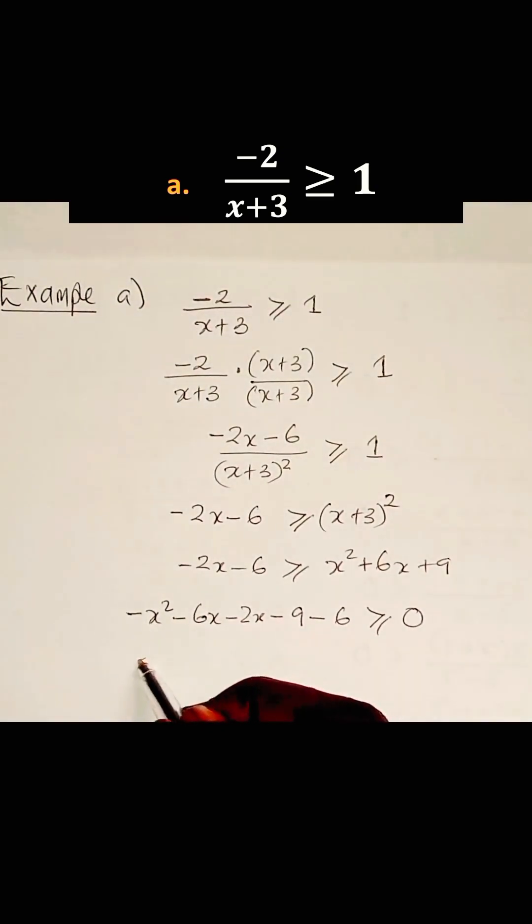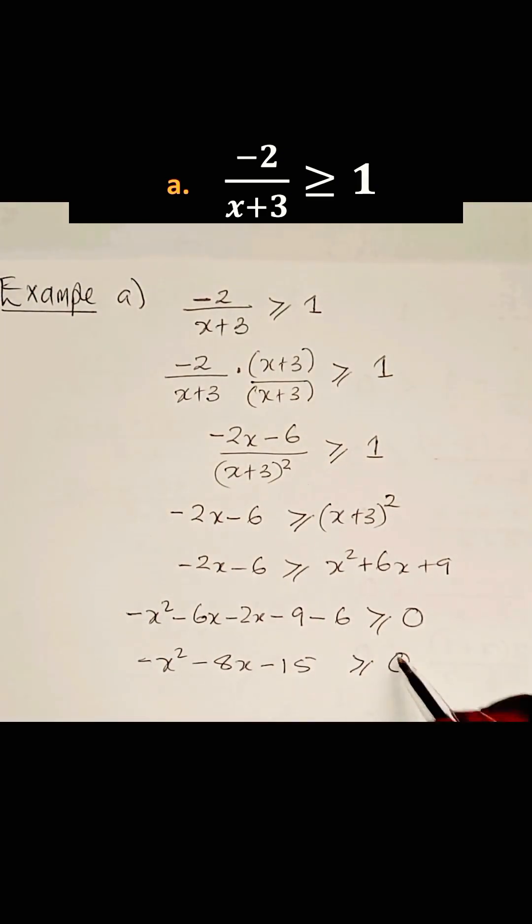Let's simplify what we have. We have -x² - 8x - 15 is greater or equal to 0.